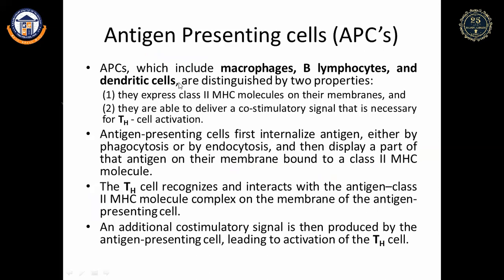APCs deliver a co-stimulatory signal necessary for Th cell activation — not only MHC presentation but also a co-stimulatory signal is needed. APCs first internalize the antigen by phagocytosis or endocytosis, then display part of the molecule on their membrane bound to MHC class II. Upon presentation, Th cells recognize and interact with the antigen-MHC class II complex on the APC membrane; additionally a co-stimulatory signal is produced by the APC, leading to activation of Th cells.